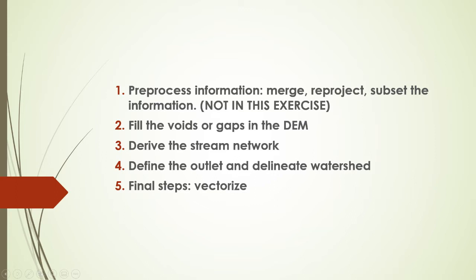We can summarize the steps for this exercise as follows. First, preprocessing of the DEM, which includes merging, reprojecting, subsetting, and filling the voids. Second, deriving the stream network according to Strahler stream ordering, and then defining the outlet and delineating watersheds. The final step is vectorization.